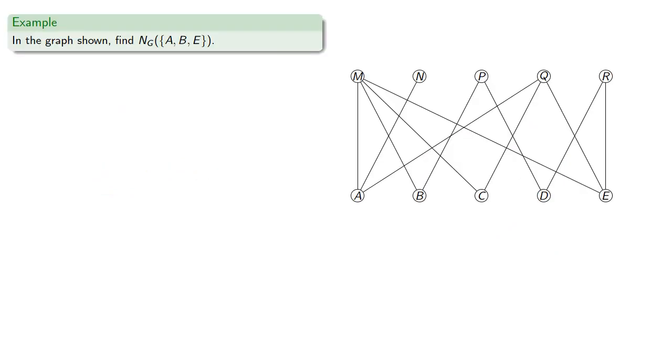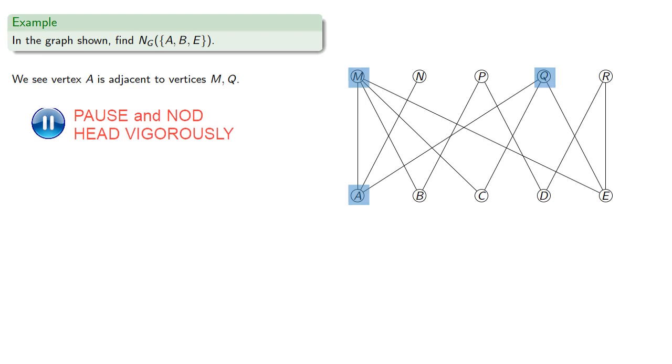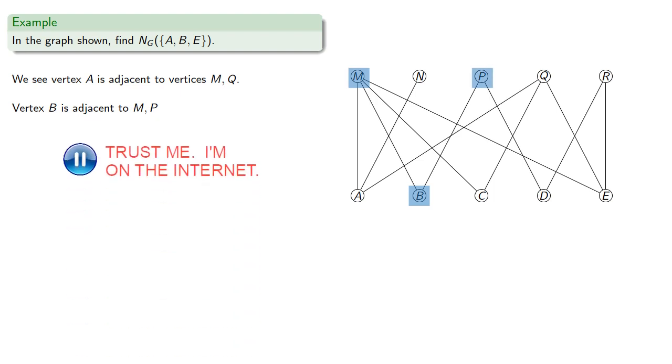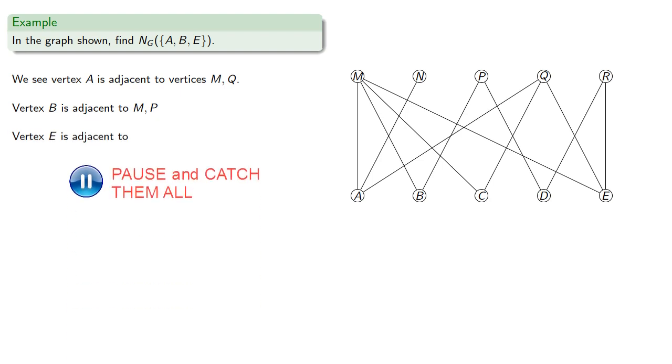So in the graph shown, let's find the neighborhood in G of the vertex set A, B, E. We see that vertex is adjacent to vertices M and Q. Vertex B is adjacent to M and E. Vertex E is adjacent to... And so our neighborhood is the set of adjacent vertices, and since it is a set, we don't list repeated elements more than once.